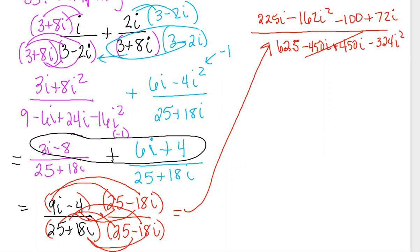And then what you do next is you change all of those i squareds to negative ones. So I'm going to write negative one here and a negative one here, and then I'm going to combine my like terms. The i's are going now to the denominator. This is going to be 625 plus 324, which is 949.